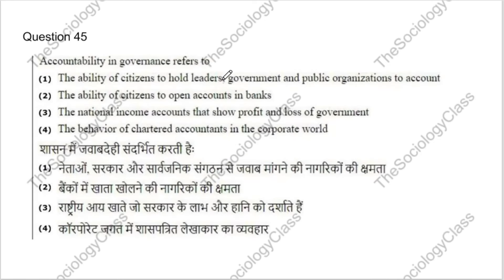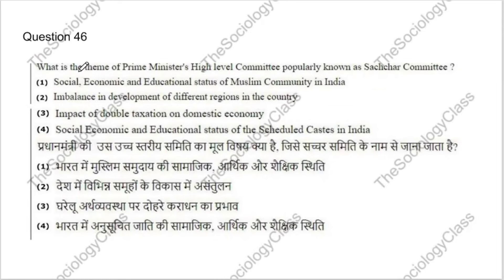Question 45: Accountability in governance refers to what? Options: the ability of citizens to hold leaders, government and public organizations to account; the ability of citizens to open accounts in banks; the national income account showing profit and loss; or behavior of chartered accountants. The correct answer is A — the ability of citizens to hold leaders, government and public organizations to account.